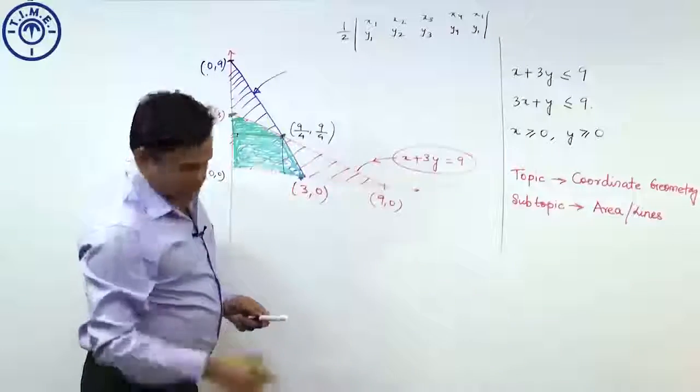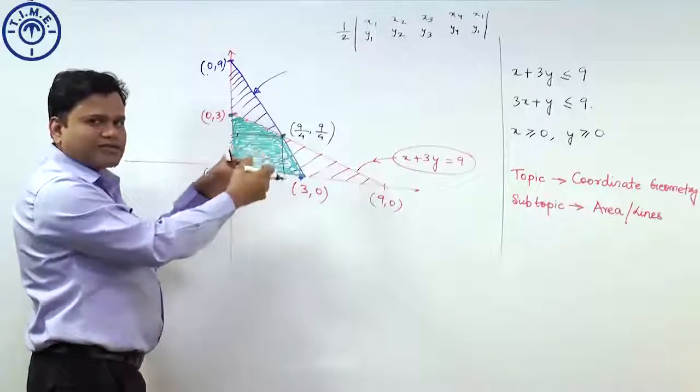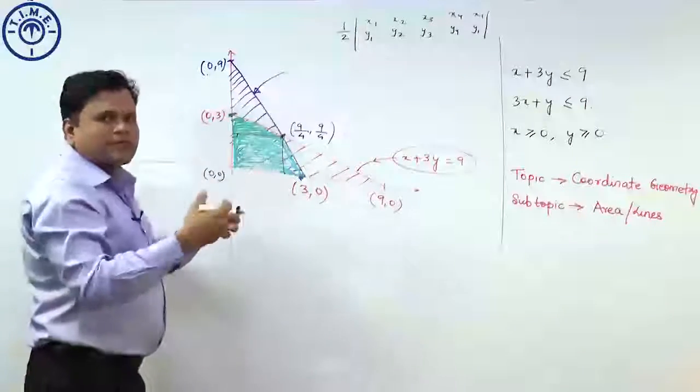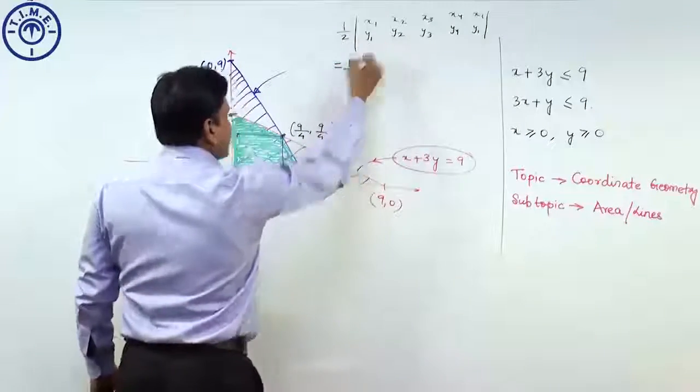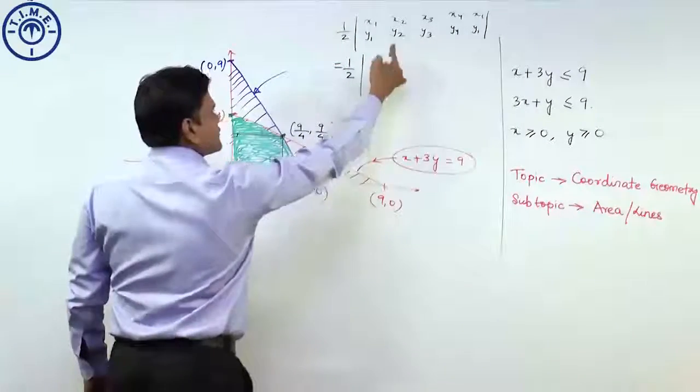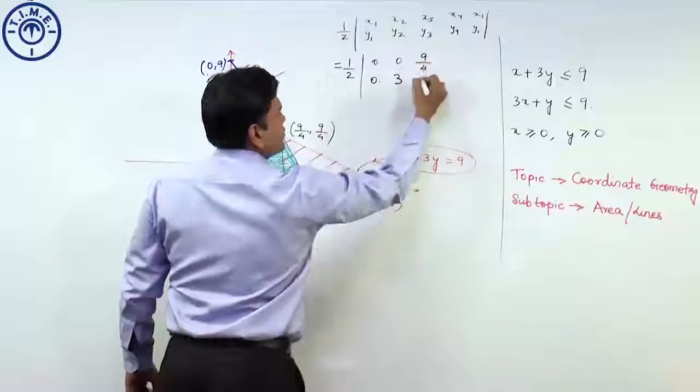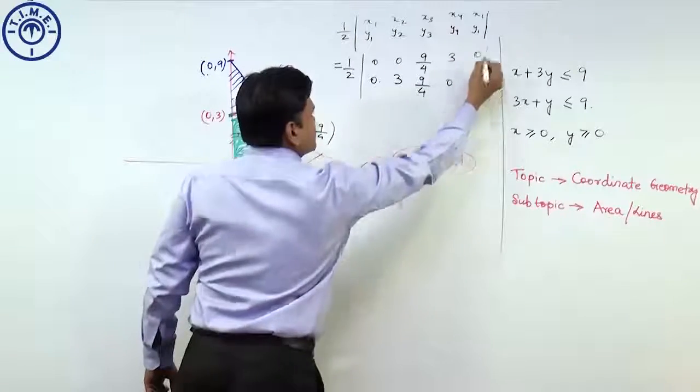What we have to do here: while the first method is something which we can actually go ahead during the test time and then can simplify, this is another one from the point of view of building our skill sets, our learning. Continuing further, this is half x1 y1, this is 0, 0, x2 y2 is 0, 3, this one is 9 by 4, 9 by 4, this is 3, 0, and finally 0, 0.